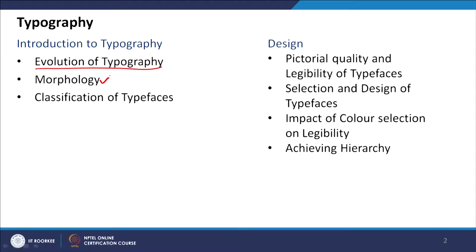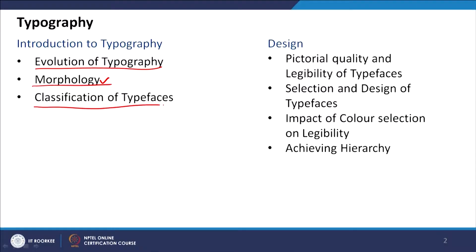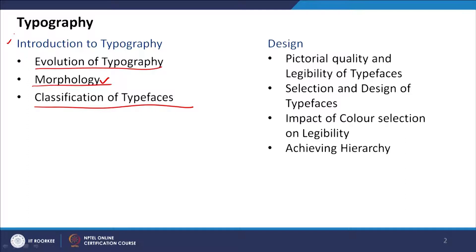If the visual style you want to portray is not so contemporary and has an older style, you have to select a typeface that matches that visual style. That is why knowing the evolution of typography is important. Then we will cover the morphology of typography — what are the different parts of a typeface, what is the x-height, the ascenders, descenders, and how we classify a typeface. Based on this morphology, we classify typefaces into sans-serif, serif, and their subcategories.